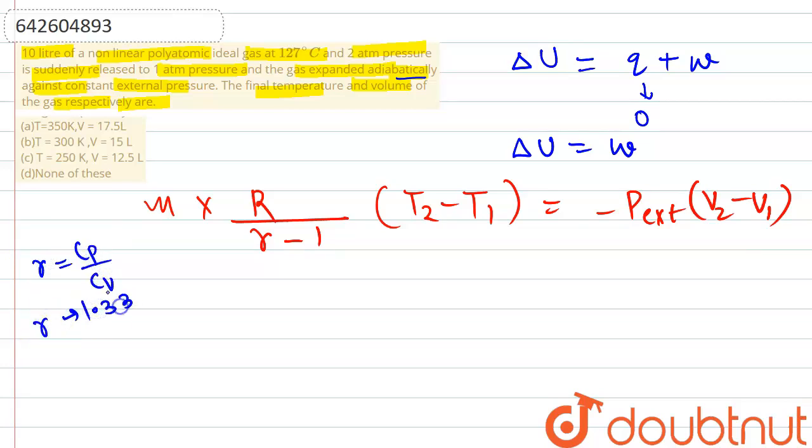Now this can also be written in another way. We know that PV is equal to nRT. So if we want to substitute the value of V1 and V2 in terms of P, we can do that. We will use this expression.